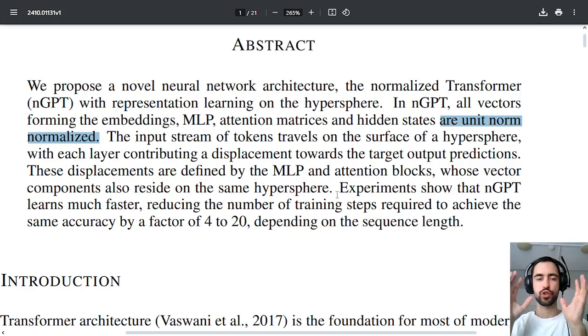And when you have an input token it gets its representation as a vector from the center to the surface of the hypersphere and all of these transformations, attention, MLP and all the other residual connections, they just rotate this vector around.